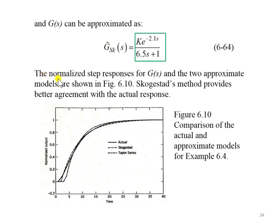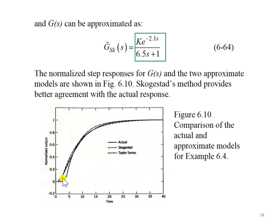Finally, the normalized step response for GS and the two approximate models are shown in the figure below. We can observe that the Skogestad method provides better agreement with the actual response. The actual response is the third-order model, and the Skogestad method, shown as the dashed line, is closer to the actual response compared to the Taylor series approximation.